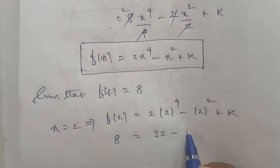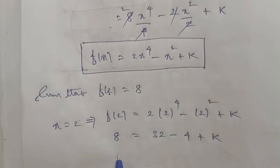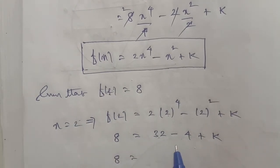So we have 8 equals 32 minus 4, which equals 28 plus k.